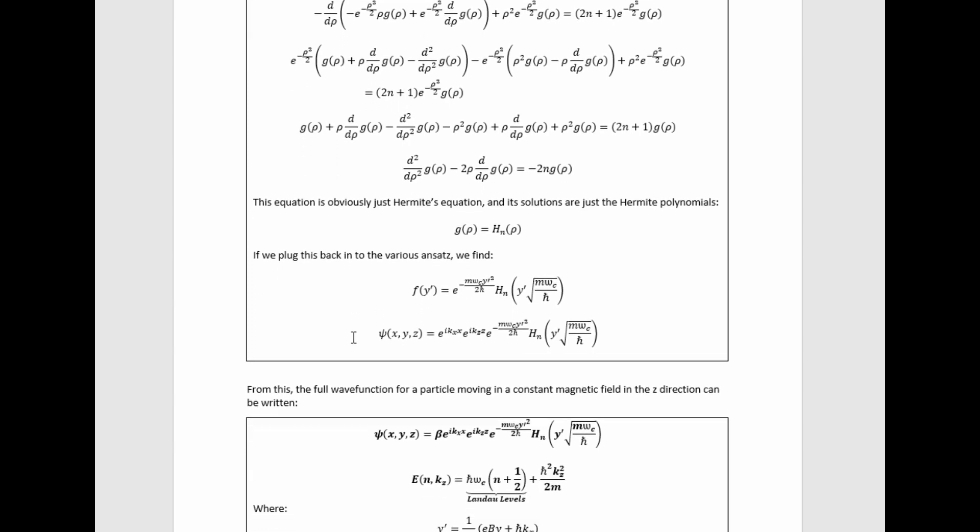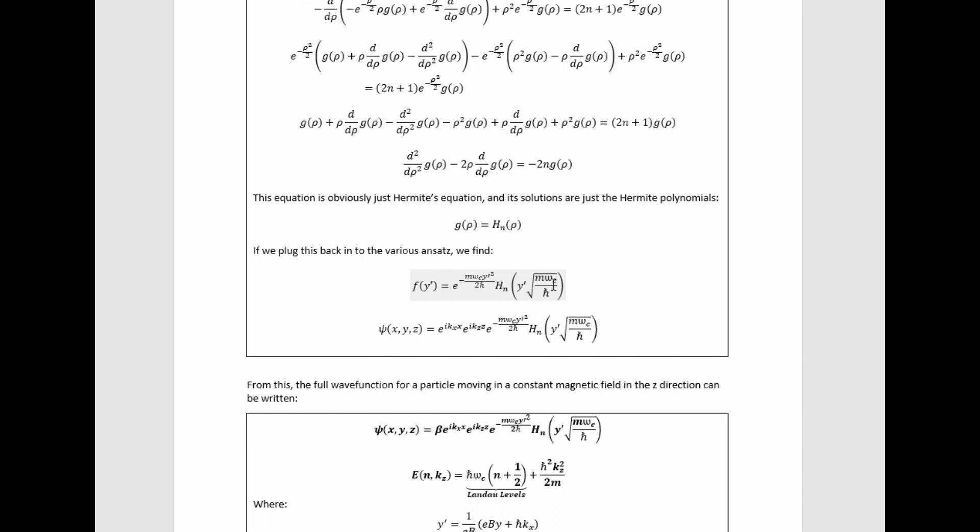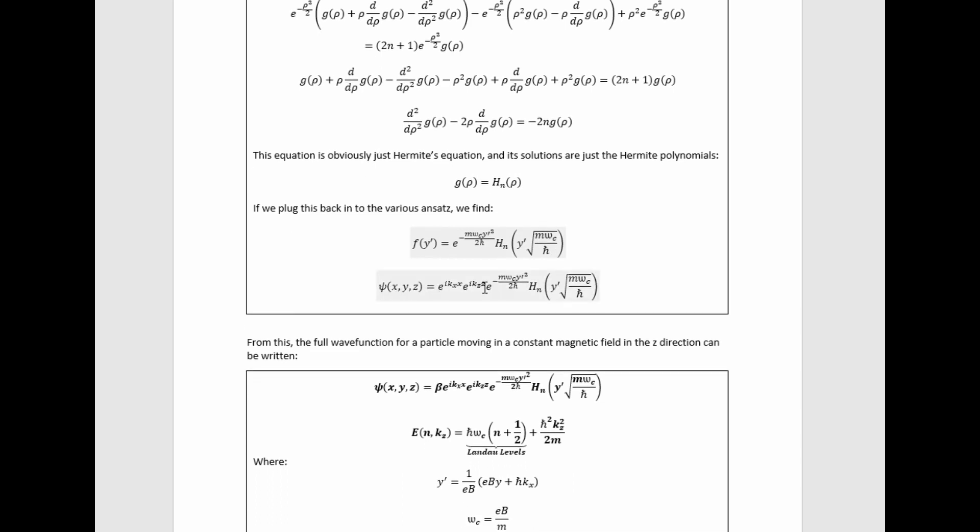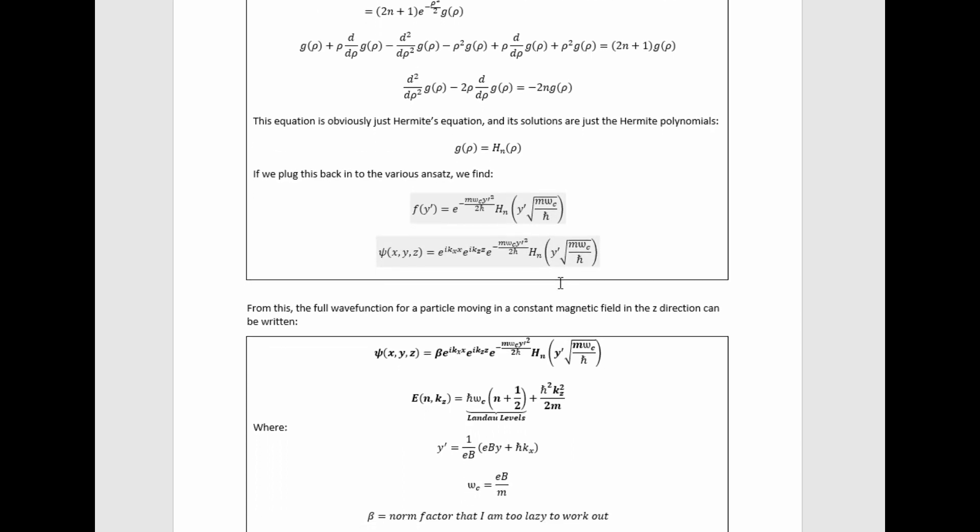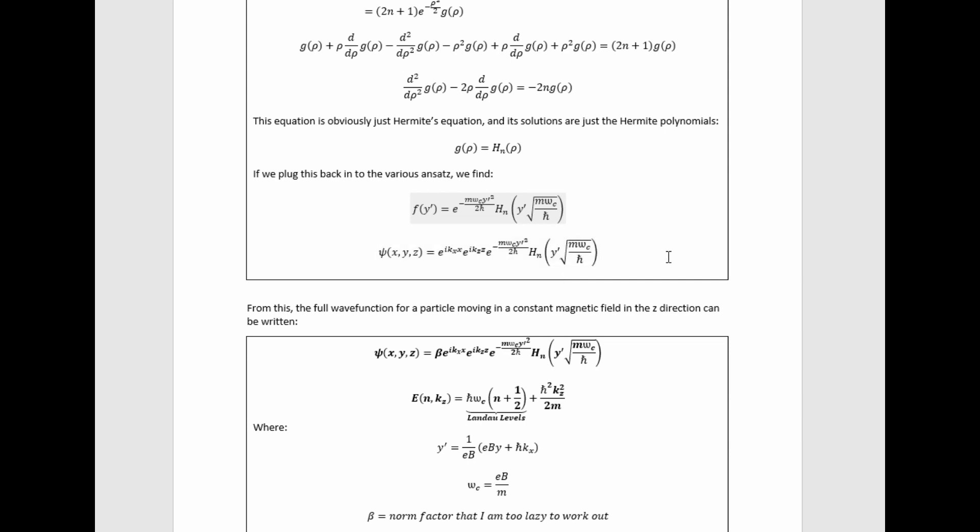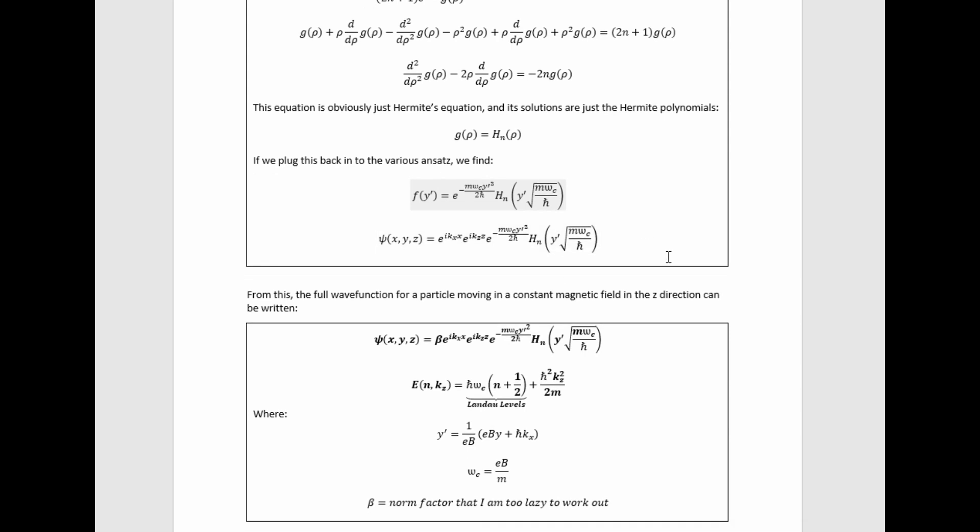So then if we look back at our various ansatzes, we realize that this function that showed up in our first ansatz, and it was broken apart in the second one, just simply has this value. And then we can find that the full unnormalized wave function just has this value. So now we've got the energy eigenvalues and the eigenfunctions. We're all done.